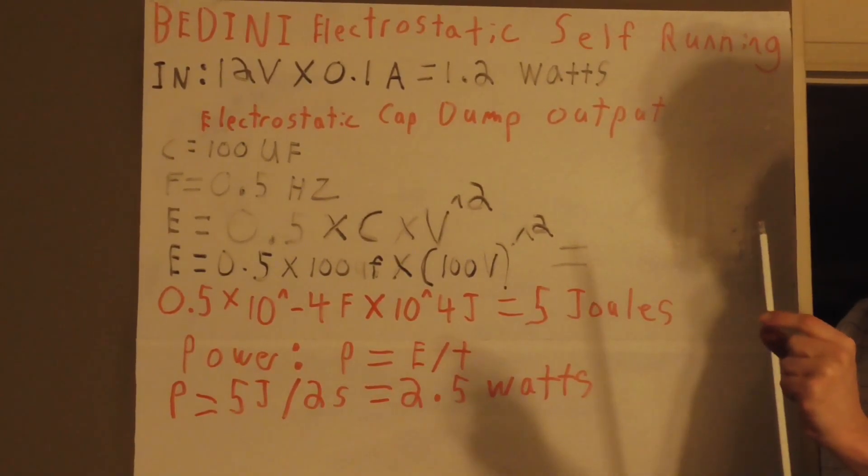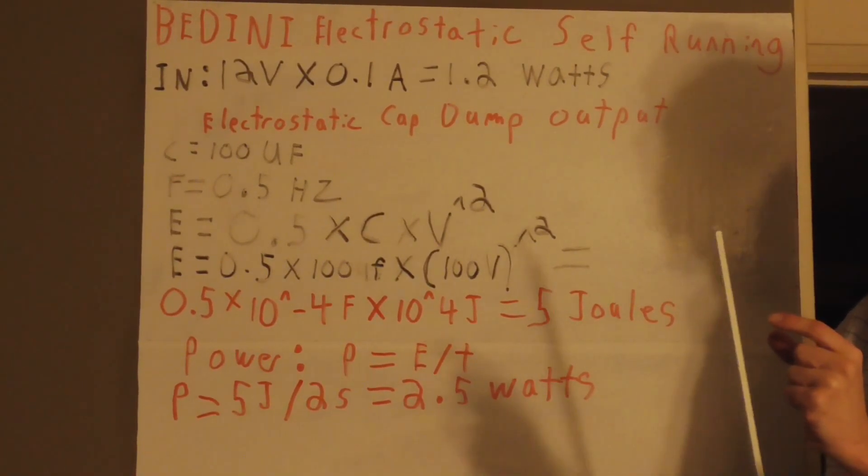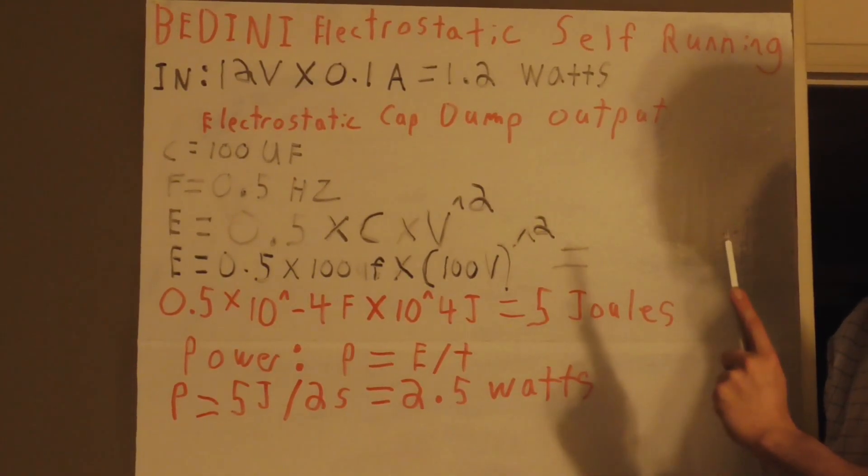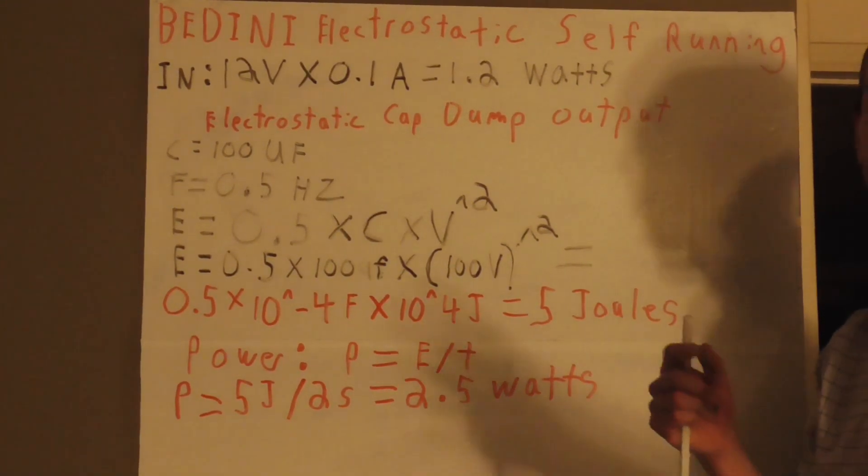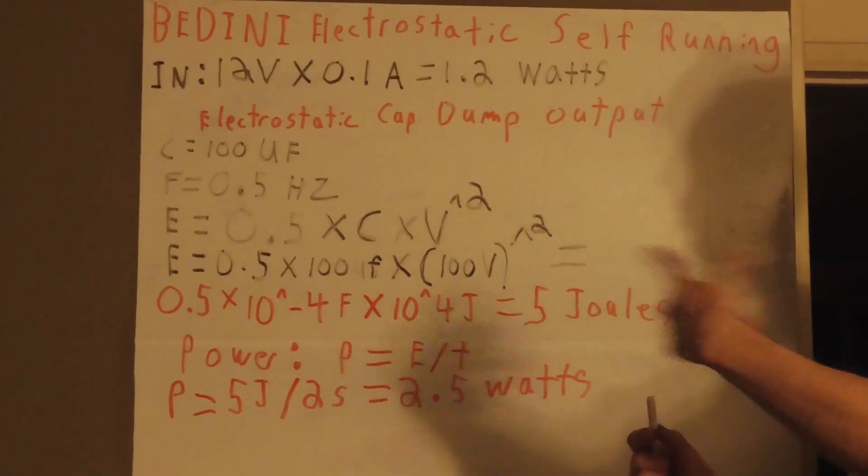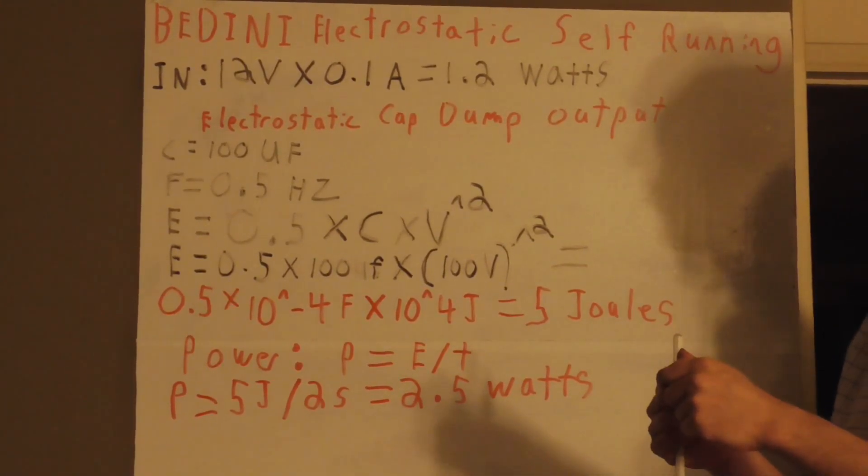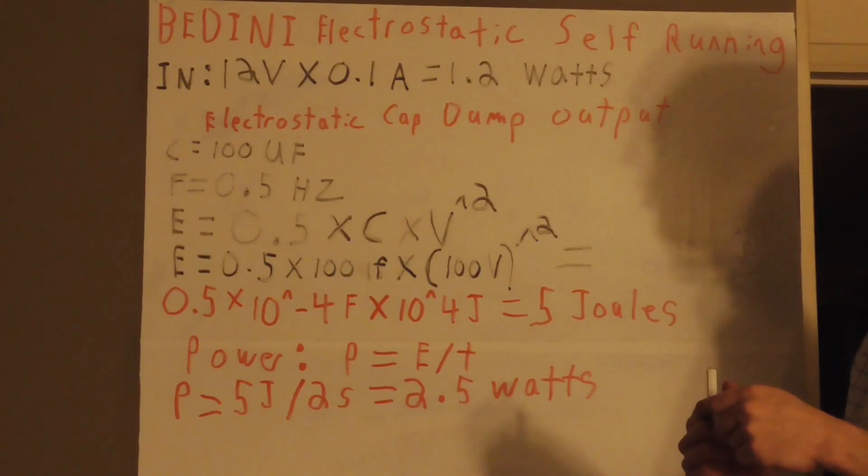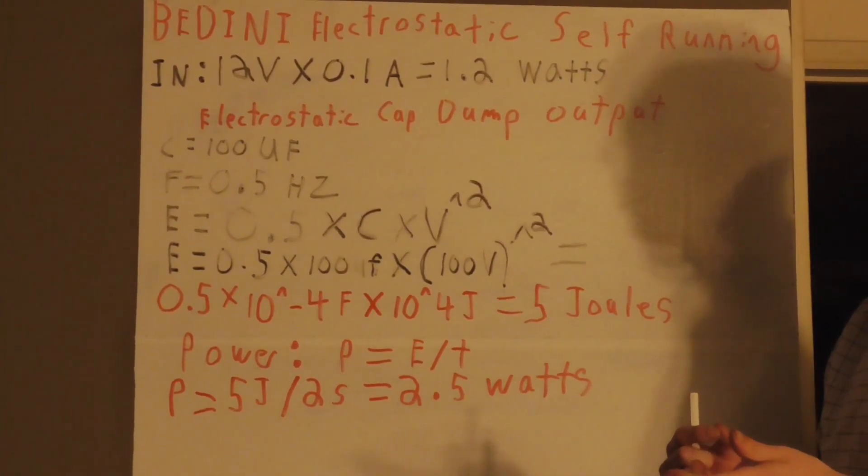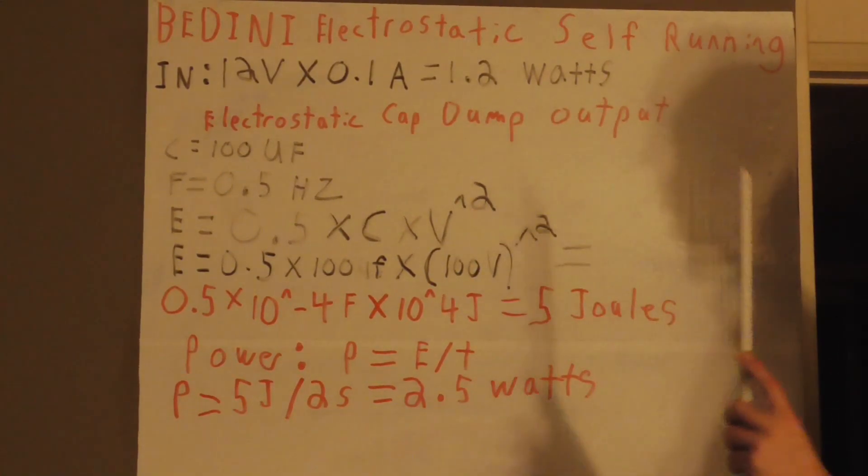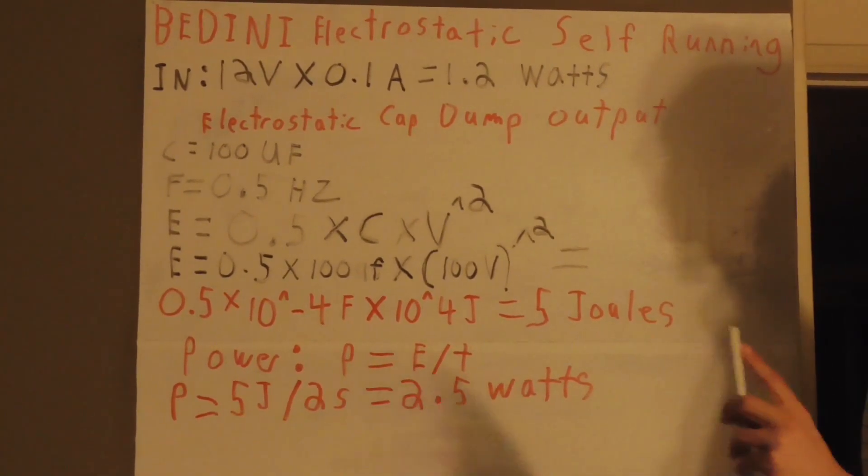So again if you know how the Bedini back EMF system works, you can actually short out both cables and the motor speeds up. So what I'm getting at is the extra load from our high voltage pulse circuit will act very similar to adding an electrostatic wheel.